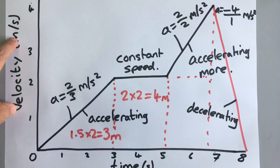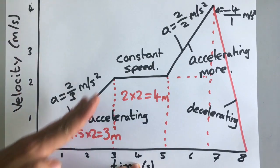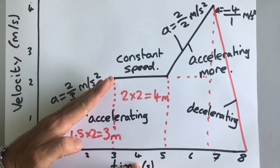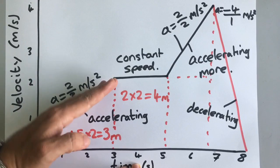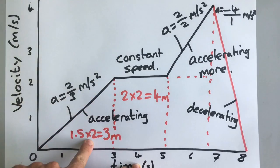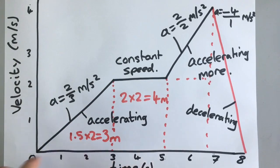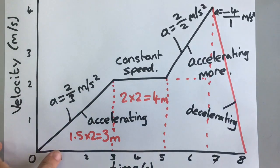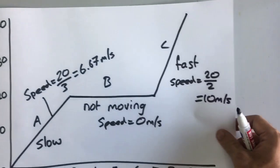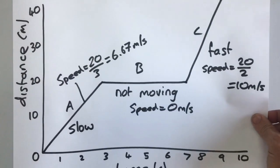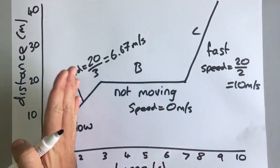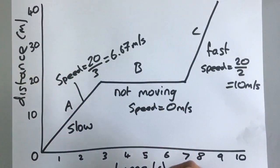So on a velocity-time graph, the gradient is the acceleration and the area under the graph is the distance travelled. On a distance-time graph, the gradient is the speed or the velocity. The area under a distance-time graph doesn't mean anything — you don't need to worry about that.